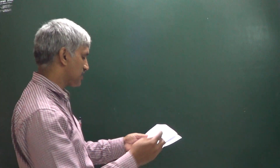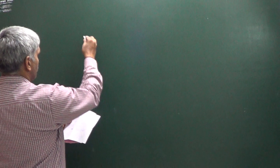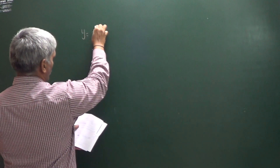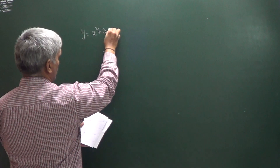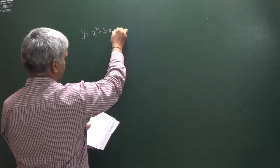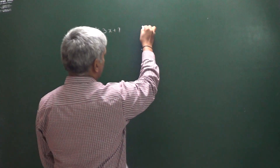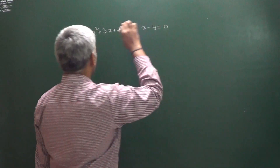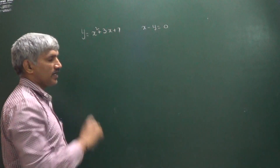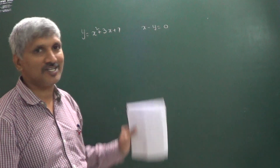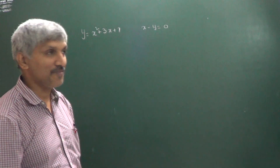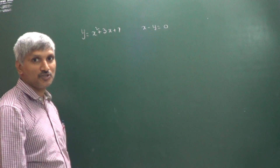Another question: find the minimum distance between the parabola y = x² + 3x + 7 and the line x - y = 0. A parabola and a line are given, and we have to find out the minimum distance between these two.